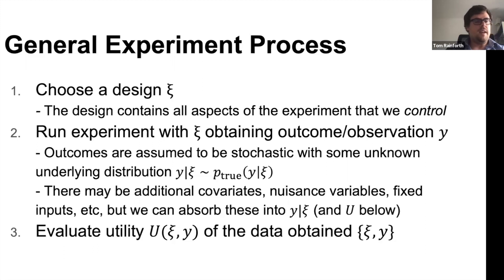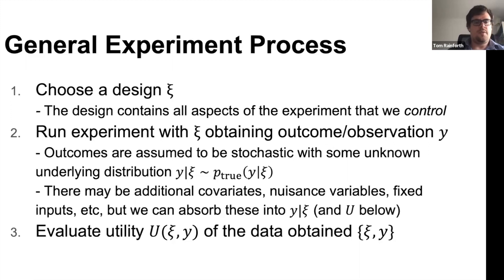Experimentation is about choosing designs — I'm going to call these chi — denoting controllable variables. A design is things in an experiment that we control, the things we set up when we start the experiment. If we're doing a survey, it's the questions we ask. If it's a physical experiment, it's how we set our apparatus up. Once we've made those choices, running experiments is some sort of stochastic process — we treat it as stochastic because we wouldn't be running it if we knew everything it was going to do.